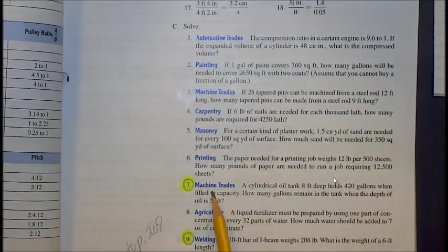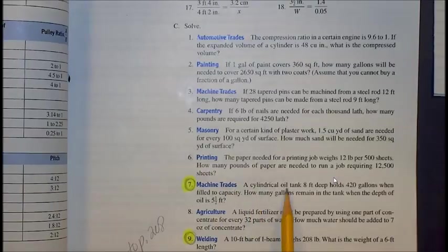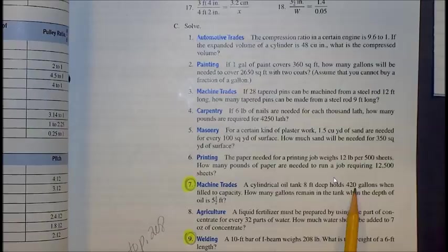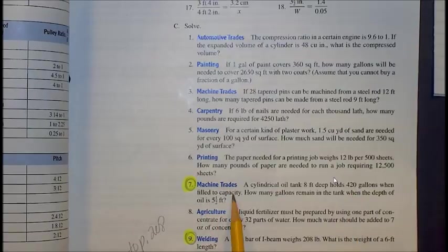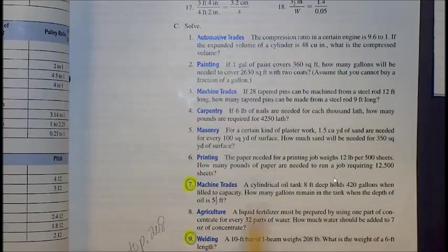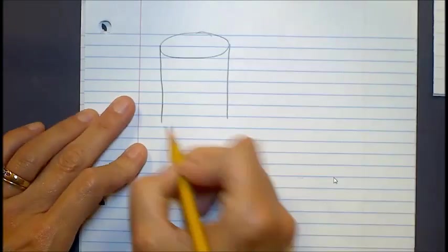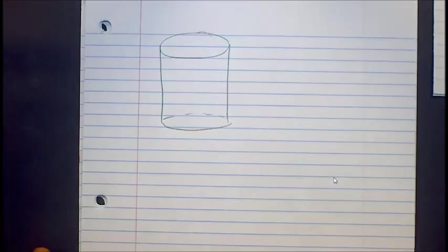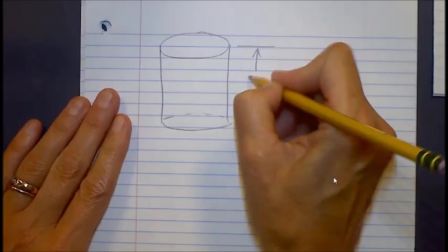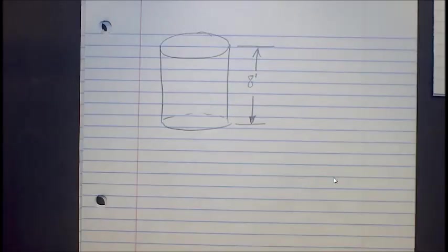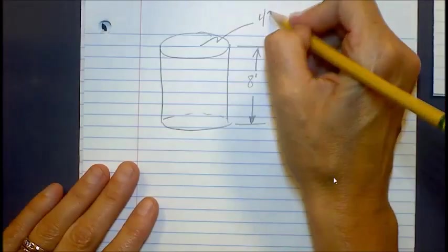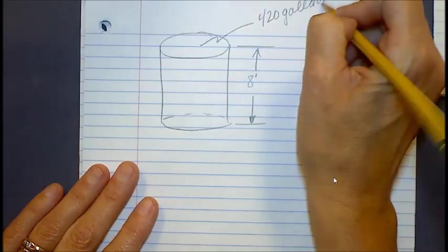So number 7 first says, we have a cylindrical oil tank 8 feet deep, holds 480 gallons when filled to capacity. How many gallons remain in the tank when the depth is 5 1/2 feet? So essentially what we have here, I'm just going to draw a picture of it, and maybe you can visualize it already, is we have a tank of oil. And it says here that the tank is 8 feet deep. And when it's filled to capacity, when it's completely full, we have 480 gallons in there. Right?